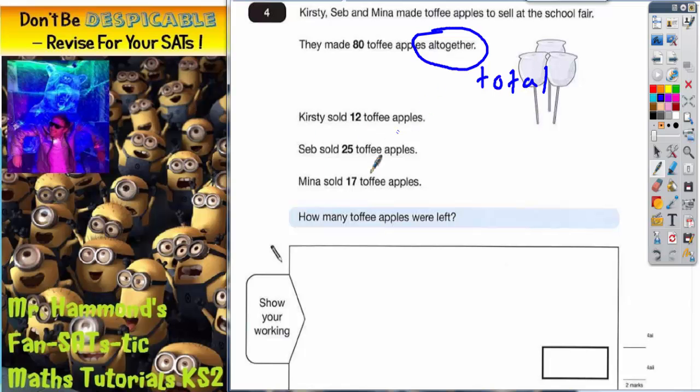Kirsty sold 12, Seb sold 25, Mina sold 17. How many toffee apples were left?